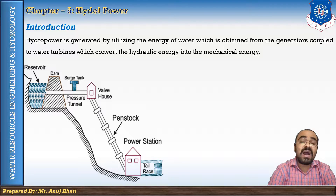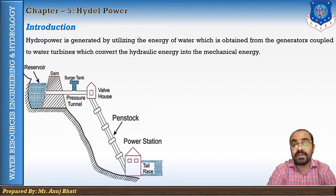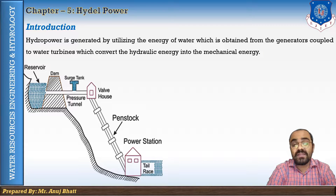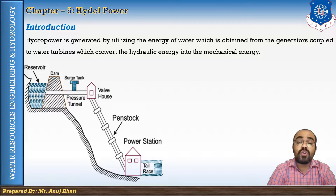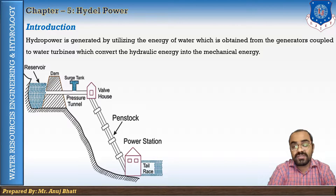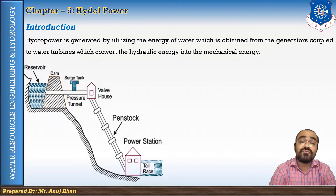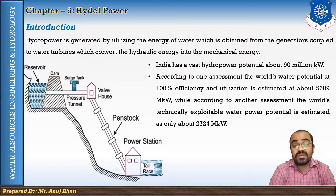Sometimes single purpose projects only for hydro power are also undertaken if economically justified. The electrical power generated in the powerhouse located at the downstream of the dam is transmitted by a network of transmission lines to far regions where it is utilized for various purposes.